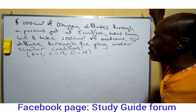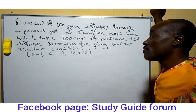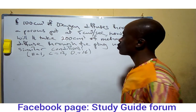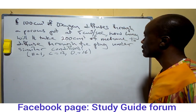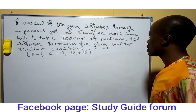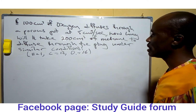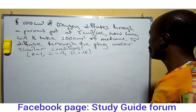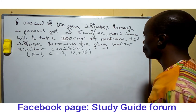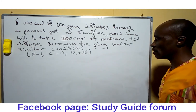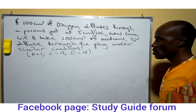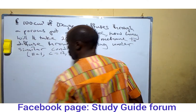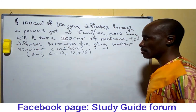The question states: if 100 cm³ of oxygen diffuses through the porous plug at 5 cm³ per second, how long will it take for 200 cm³ of methane to diffuse through the same plug under similar conditions? Based on that, we apply Graham's Law of diffusion.